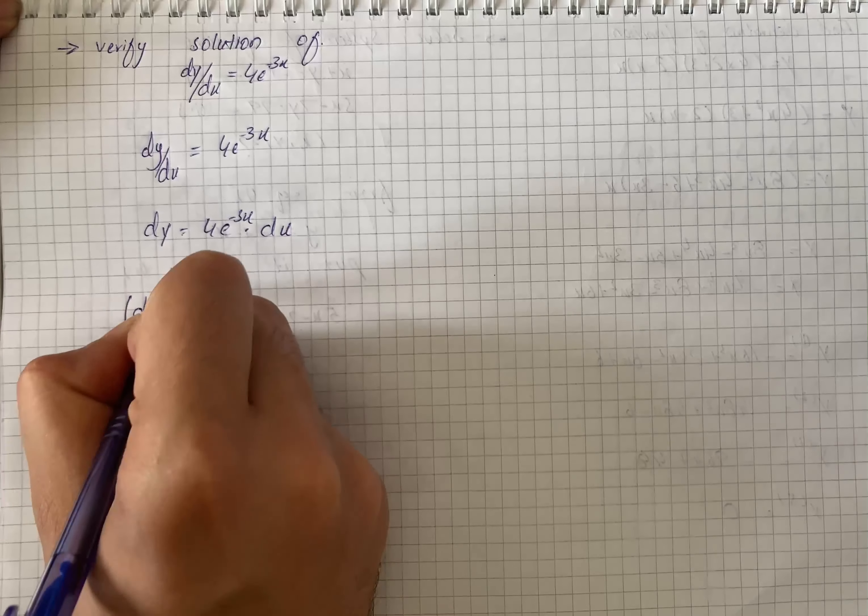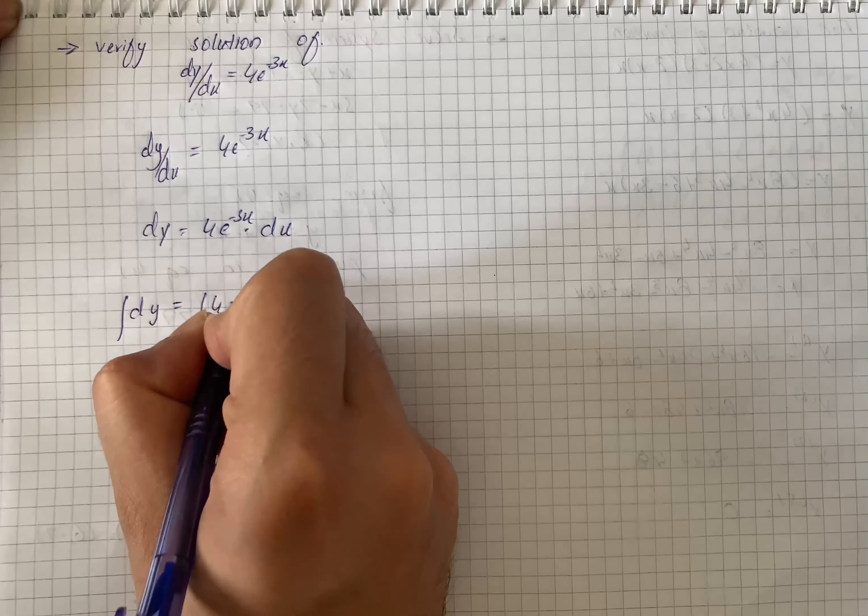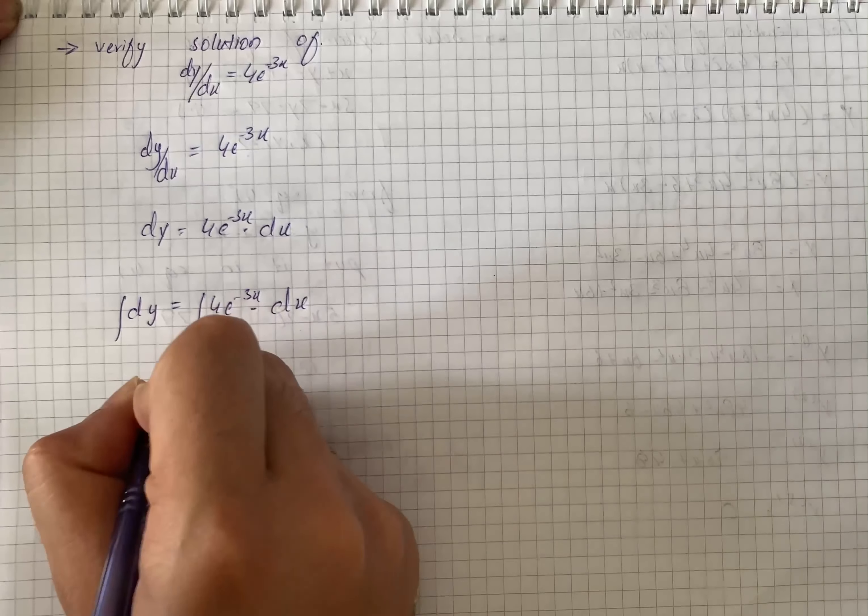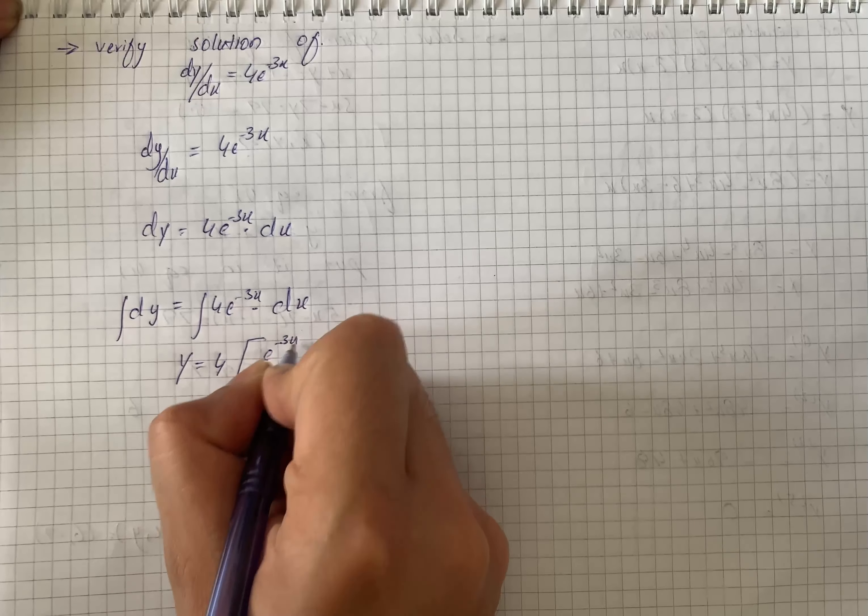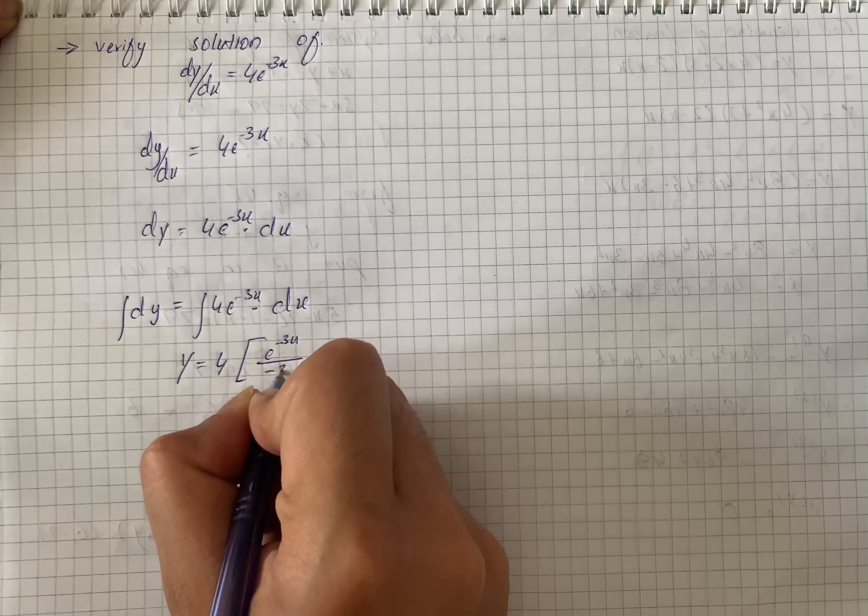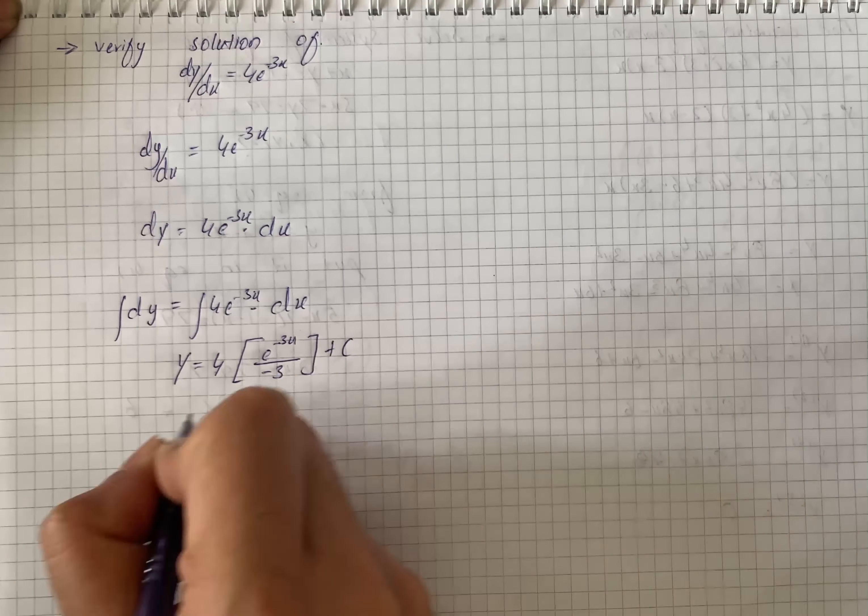Now integrating both sides will give us the integral of dy is equal to the integral of 4e raised to the power minus 3x into dx. So we have y equals 4 into e raised to the power minus 3x divided by minus 3 plus C.